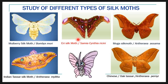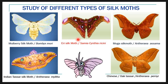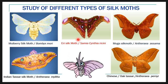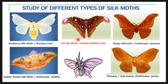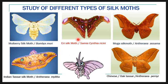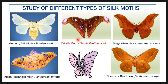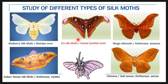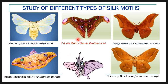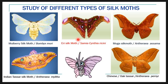The next is Samia cynthia ricini, commonly called the Eri silk moth. It has brown-colored wings with purple strips. The larvae of the Eri silk moth are polyphagous, mainly feeding on castor plants. In India, the Eri silkworm is commonly reared in the northeastern states.